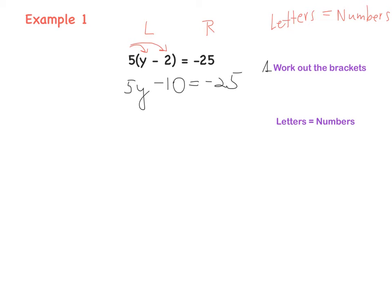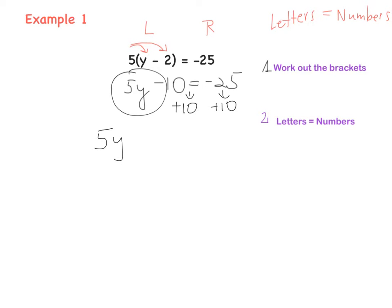Now time for the next step. We need to tidy up a little bit — letters on the left, numbers on the right. We have 5y minus 10 equals minus 25, so we can leave 5y as it is. We need to get rid of minus 10, so we need to do the opposite, the inverse operation, which is adding. So we add 10 here and add 10 here. Then we have minus 25 plus 10, which is minus 15.